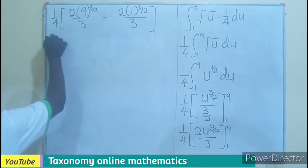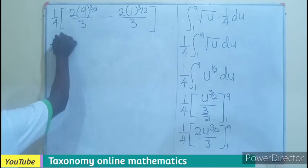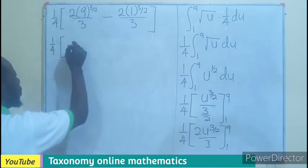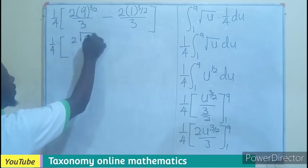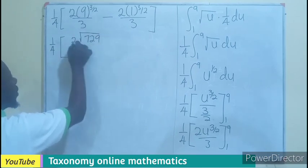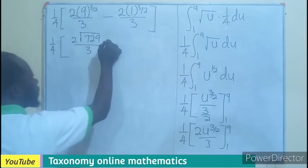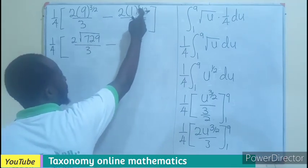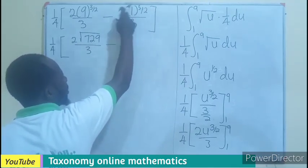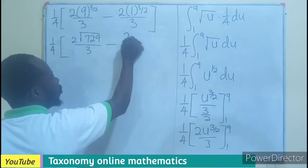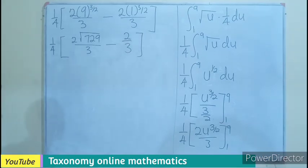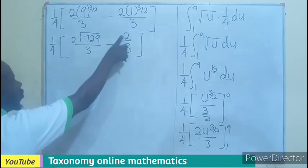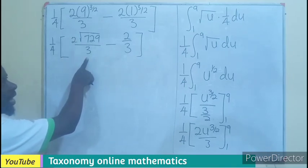So, from here, we are still going to have 1 out of 4, multiplying 2, root of 729 over 3, minus this is going to give us 1 times 2, which will still be 2 out of 3. Then we have that. Now, what do we do next? We can see that 2 out of 3, 2 out of 3 is a factor. So, we can factorize that out.